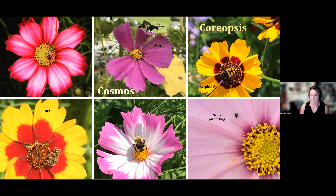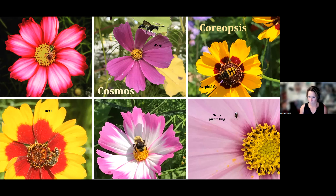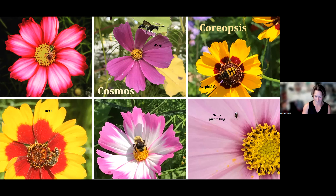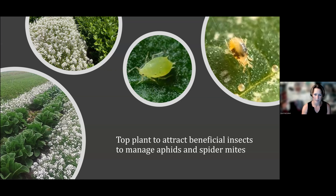Here are a few pictures from cosmos and coreopsis showing some of the visitors, all taken from our habitat plantings over the years. There's a wasp visiting — just kind of perched up there in the cosmos, waiting to leap on some poor prey. Orius is a little blurry and it's hard to get good pictures of them — they're just so tiny that unless you have a really good macro lens, it's really difficult.